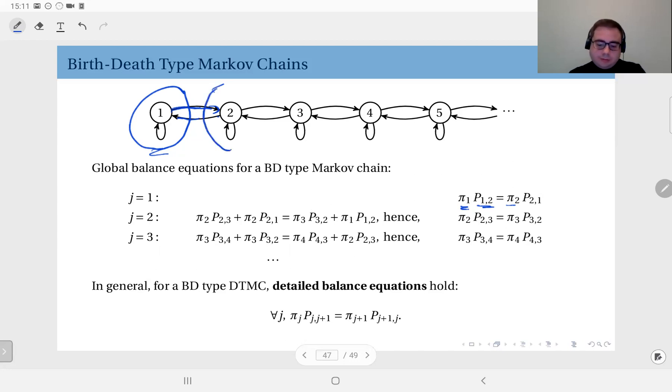Do that also for state 2. The flux incoming is from 1 and from 3, and that is π_1 times P_12 and π_3 times P_32. That is the incoming probability flux. This should equal the outgoing, let me indicate this with red, and that is π_2 times P_23 and P_21. Now you see here...